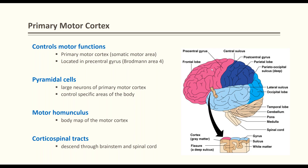The speech area is also anterior because it is part of motor function. The primary motor cortex controls motor function and is the somatic motor area, also known as Brodmann area 4. The three names for this region are: precentral gyrus, primary motor gyrus, and Brodmann area 4. Pyramidal cells are the main cells originating from this area — they are large cells controlling specific areas of the body. The body map of the motor cortex is known as the homunculus.